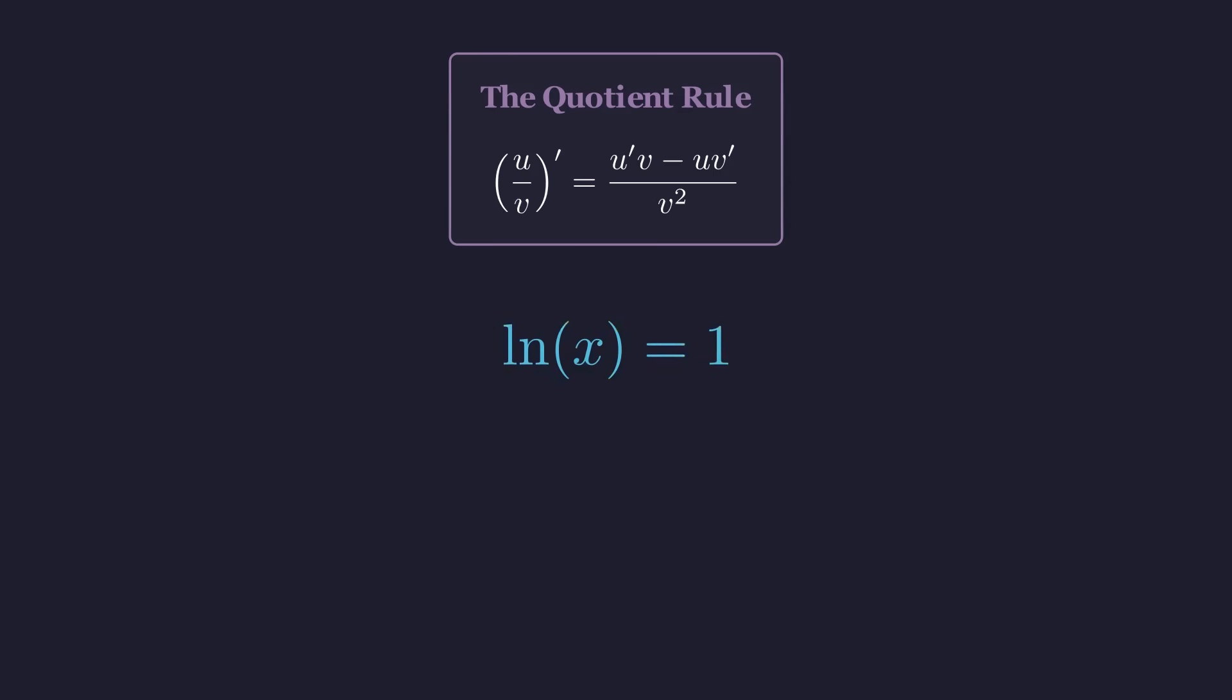To solve for x, we need to undo the natural logarithm. The way to do that is to exponentiate both sides using base e. So we raise e to the power of both sides. Now, e to the power of something and the natural log of something are inverse operations. So e to the natural log of x just gives us x. So we discover that our function has a critical point at x equals e, Euler's number.